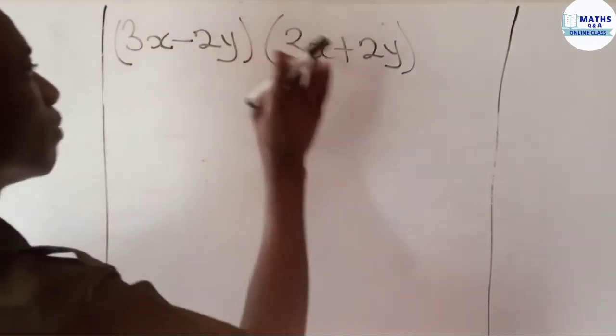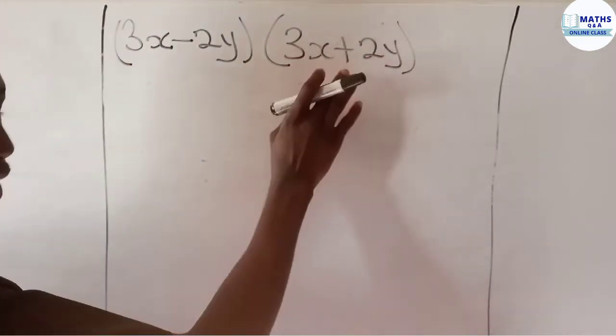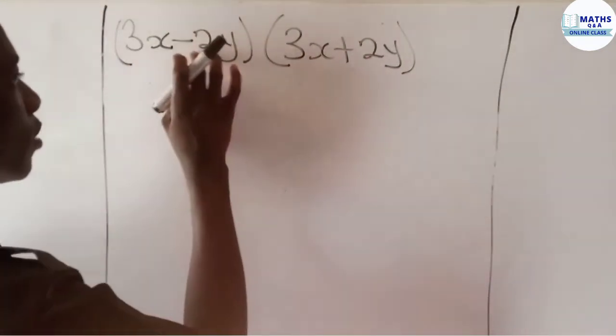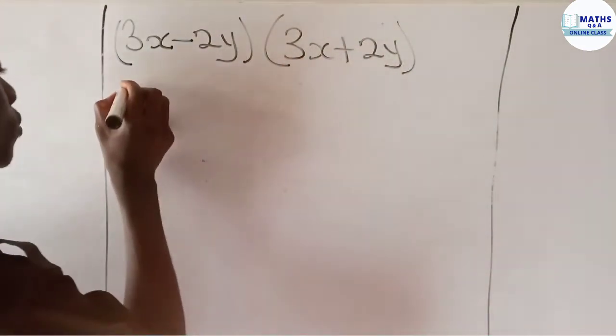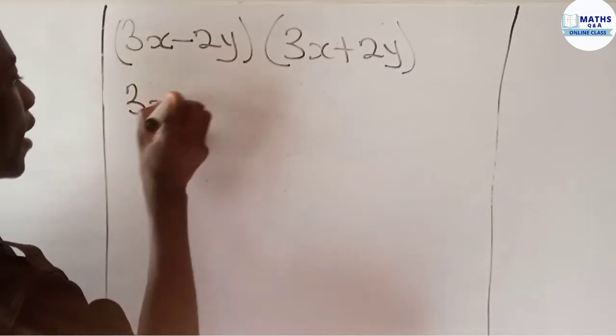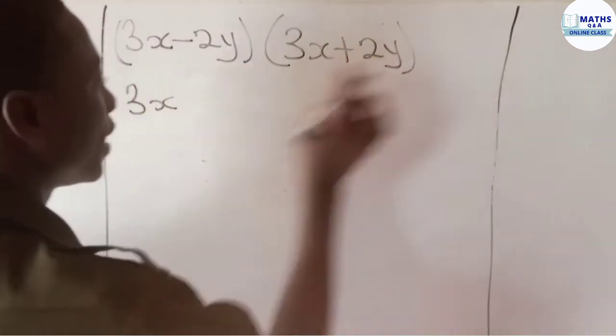Then you take this term, multiply by each term in this bracket. Let's do that. So we take 3x and multiply by the entire terms in this bracket, which is 3x plus 2y.